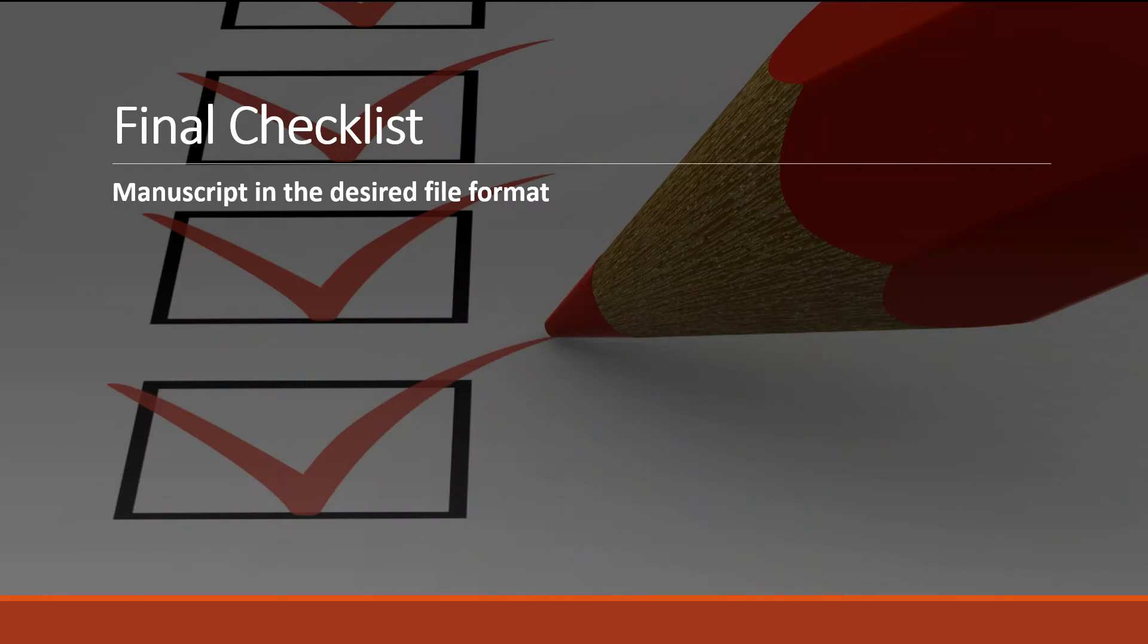Now we come to the final checklist. You have to be ready with these things. Number one: manuscript in the desired file format, whether it is required in Word and which version. Prepare your file in that version, and that too with author or without author. Many journals require the manuscript without any indication of authors for blind peer review. Sometimes journals require both.